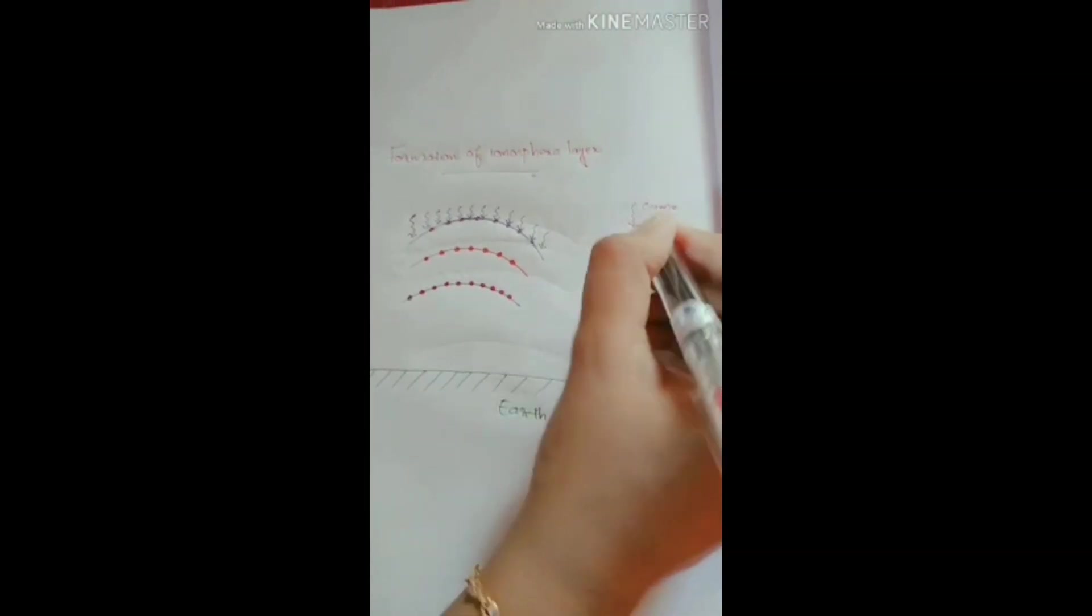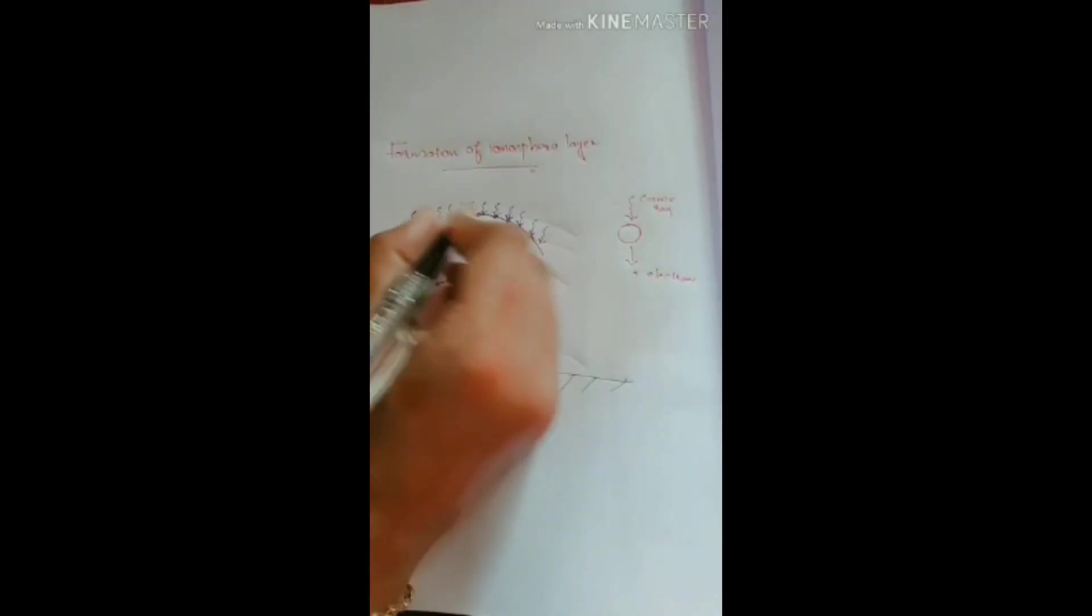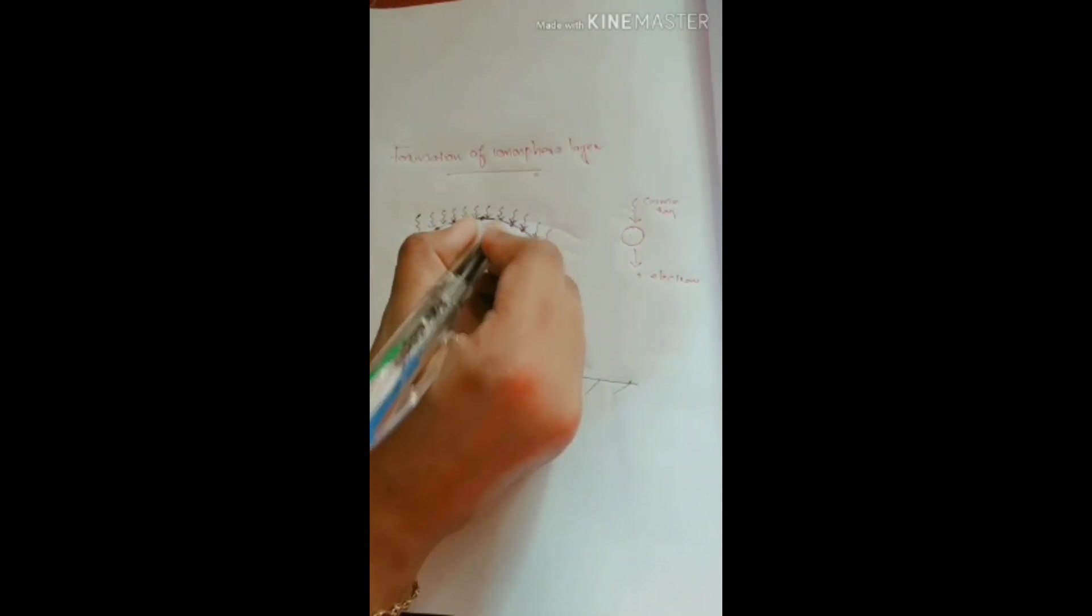So when a cosmic ray is hitting an atom, an ion is generated. When a cosmic ray hits, these atoms are turned into ions.